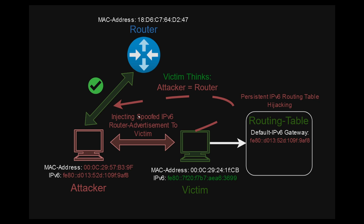This attack could also be called a persistent IPv6 routing table hijacking, including NDP spoofing for the network protocols regarding IPv6. Basically, all the traffic — even after stopping the attack — will be routed to the attacker, because the routing table has a persistent cache of the attacker's IPv6 address, so all the victim's traffic will be redirected to the attacker's machine.